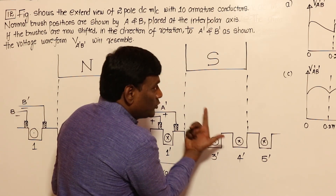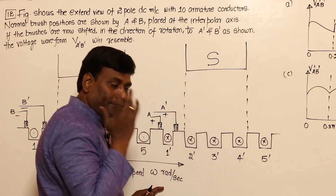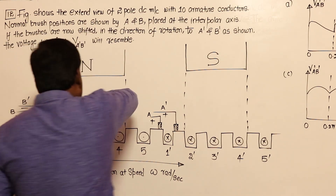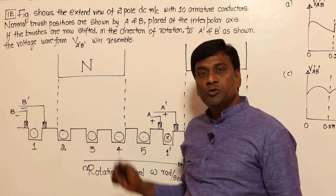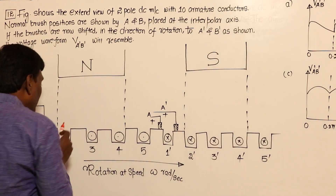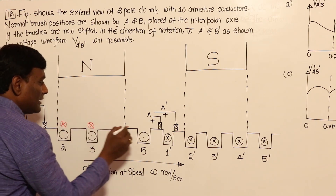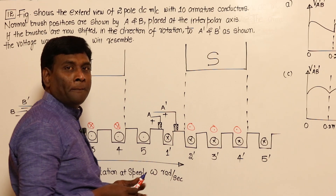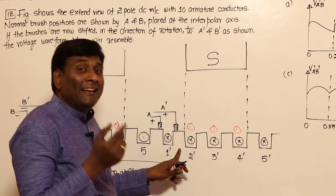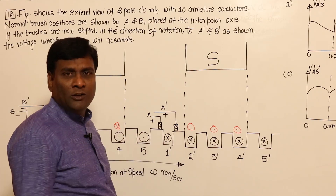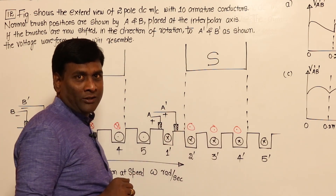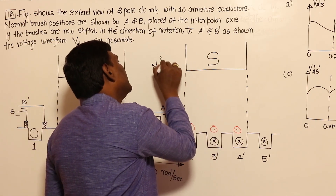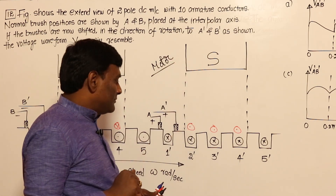Under the S-pole, flux going in and conductor motion gives a dot. Under the N-pole, flux comes out and conductor motion gives a cross. So induced voltages here are crosses and induced voltages here are dots. Now, is it motor or generator? It's a motor, because induced voltage and direction of current are against each other. So these are currents, and voltage is against the direction of current - it is a motor.